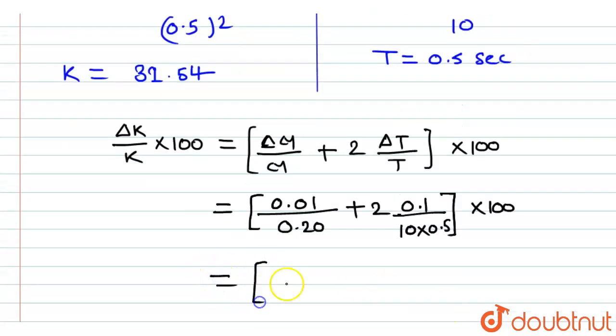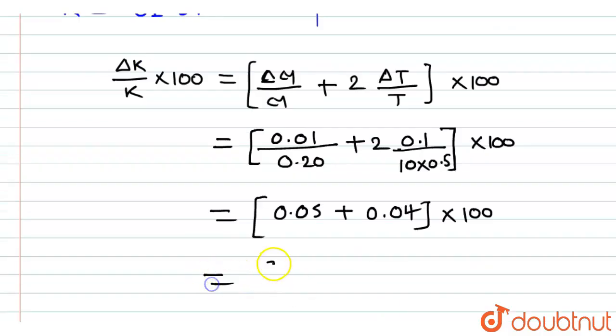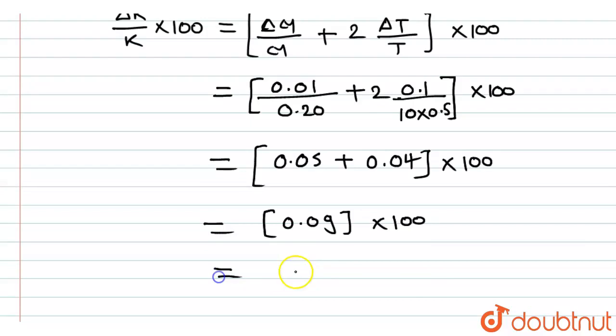So, on solving this, we get 0.01 divided by 0.20, the outcome is 0.05 plus 0.01 divided by 5 multiplied by 2, it will be 0.04 into 100. So on solving this, we get 0.09 multiplied by 100. So percentage error in the measurement of spring constant is 9%.